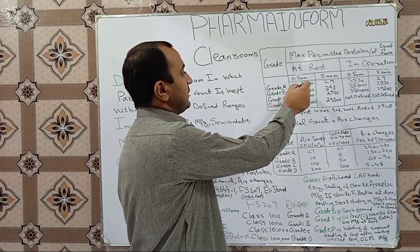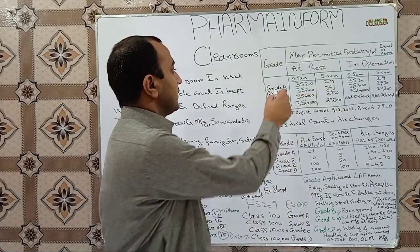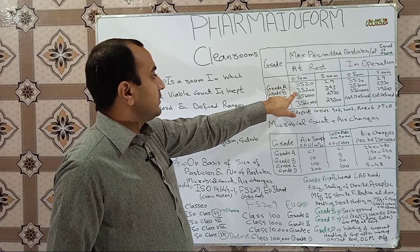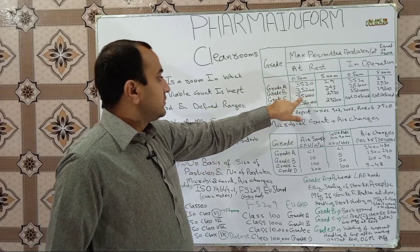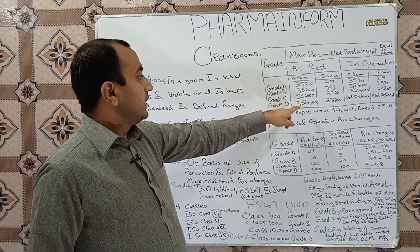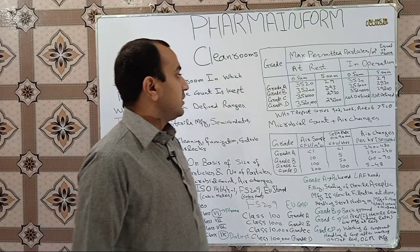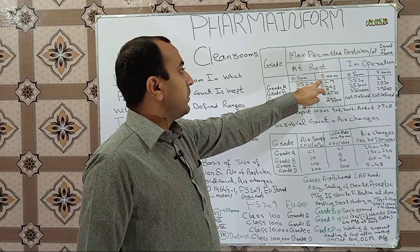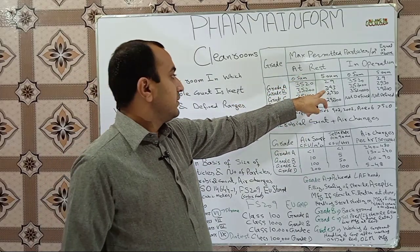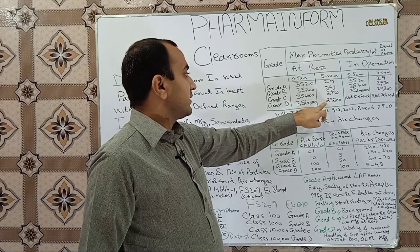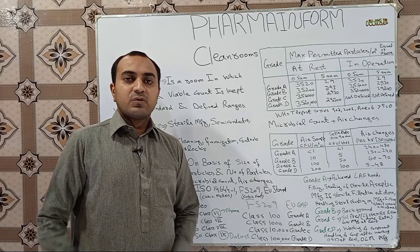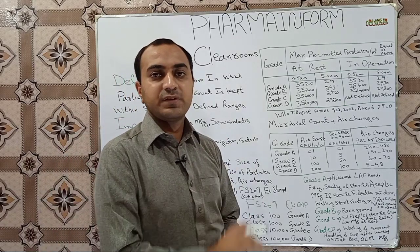According to this table: Grade A at rest — 0.5 micron particles (equal or above) will be 3,520. In Grade B these particles will be 35,200. In Grade C: 3,52,000. In Grade D at rest, permitted particles are 35,20,000. For particles equal or above 5 micron at rest: Grade A — 29, Grade B — 293, Grade C — 2,930, Grade D — 29,300.